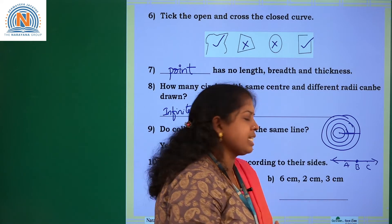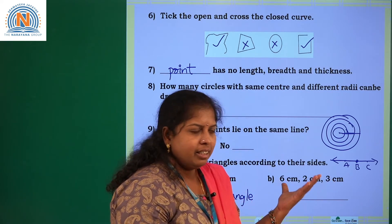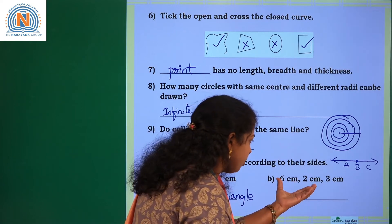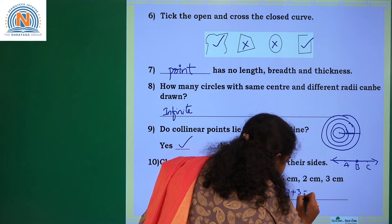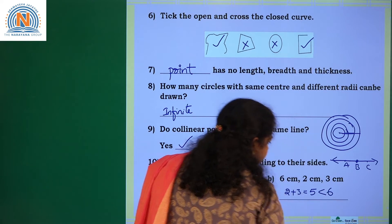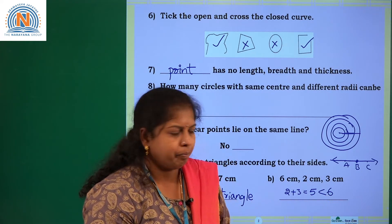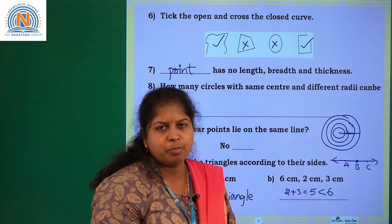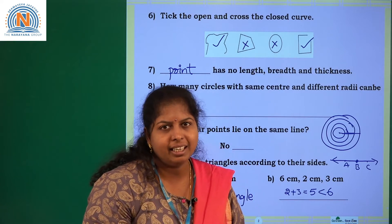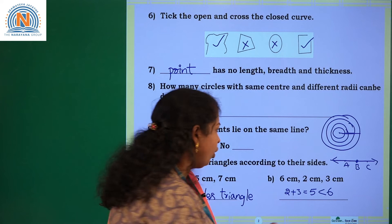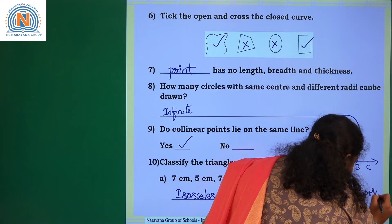The next triangle: 6 centimeters, 2 centimeters, and 3 centimeters. Observe all the given measurements — you might write scalene, but remember: 2 plus 3 equals 5, which is less than 6. To form a triangle, any two sides' sum must always be greater than the third side. Here it is smaller, so a triangle cannot be formed in this case. Triangle formation is not possible.